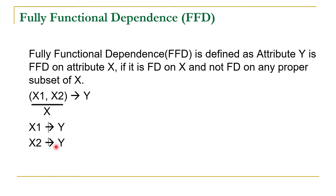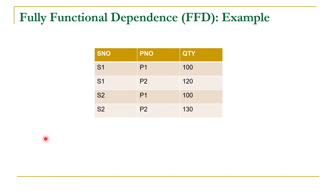In order to understand this concept further, let us consider the SP relation having three attributes: S number, P number, and quantity. One supplier can supply multiple parts in different quantities. Supplier S1 is supplying P1 and P2 parts in certain quantities, while supplier S2 is also supplying P1 and P2 parts. In the SP relation, the primary key is the combination of S number and P number.